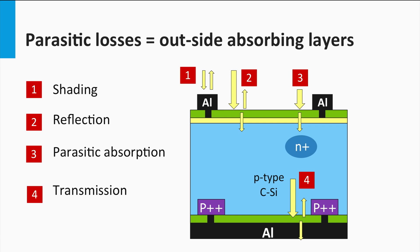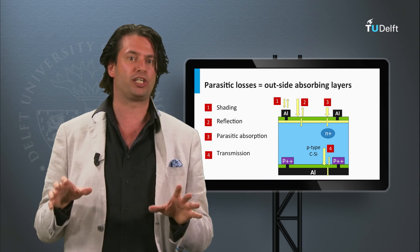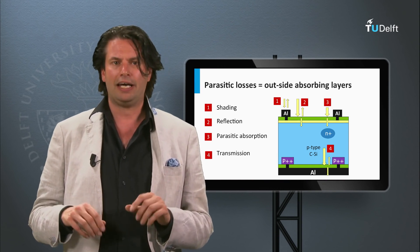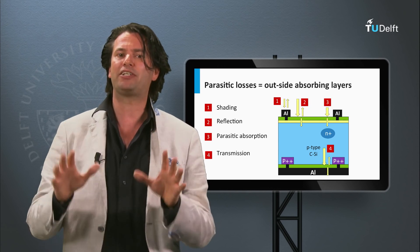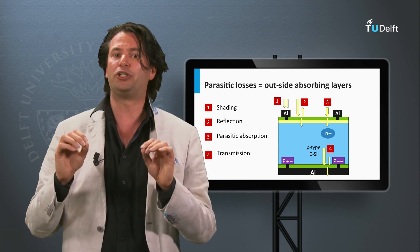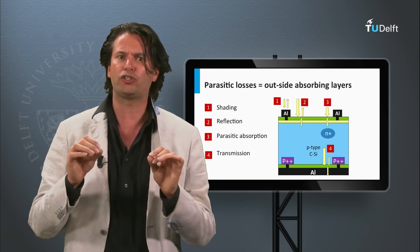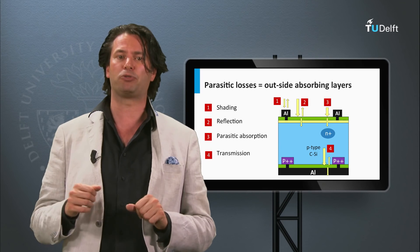Finally, if the absorber layer is not thick enough to absorb all light, part of the light will be transmitted. This loss mechanism starts to play a role for solar cells based on thin films. In the next final block of this week, I will discuss methods to reduce the reflection at the front surface of a solar cell and I will discuss under which condition light might be trapped in the absorber layer.